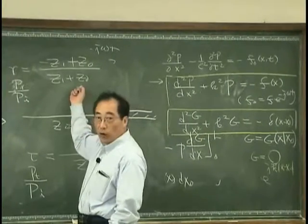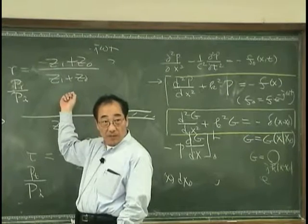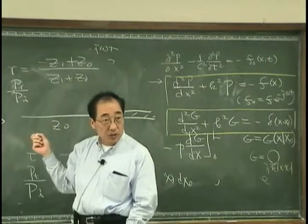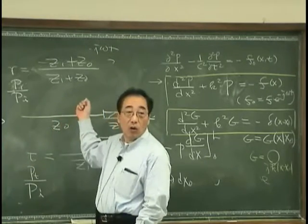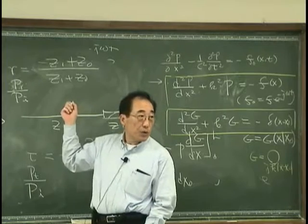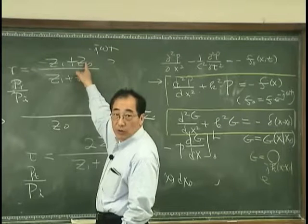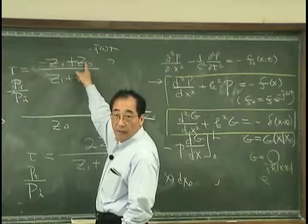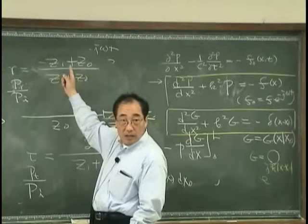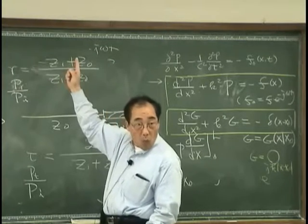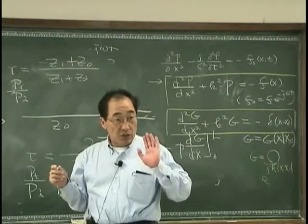For example, if Z0 and Z1 is the same, then reflection coefficient has to be zero because everything is transmitted. And if Z0 is very, very large compared with Z1, then Z0 is very large compared with Z1. The ratio is 1, right? That means Z0 is very large. There is a...